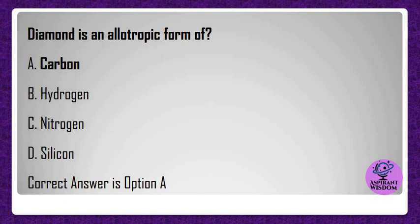Diamond is an allotropic form of? A) Carbon, B) Hydrogen, C) Nitrogen, D) Silicon. Correct answer is option A.